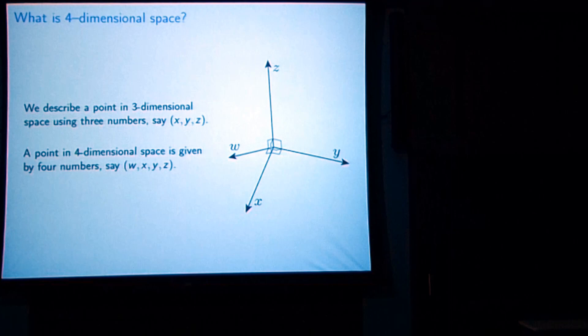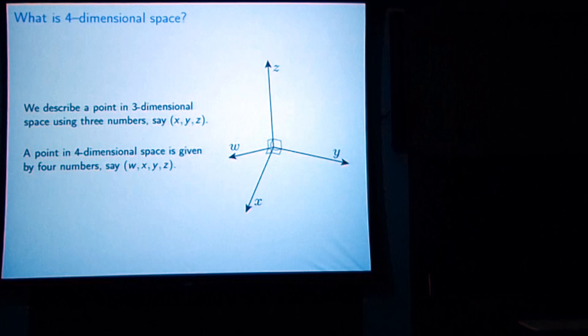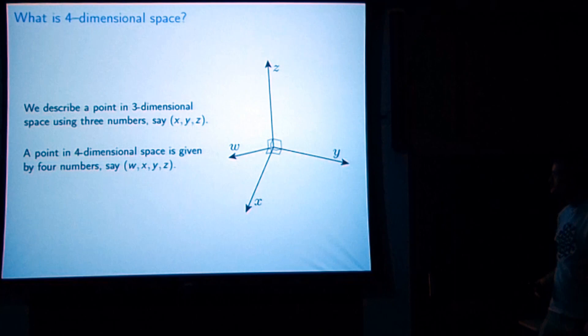A point in four-dimensional space is given by four numbers. And because we've run out of letters at the end of the alphabet, we add one up front, so we have w, x, y, z. You might say this is impossible — you can't fit a fourth perpendicular direction into what you already have. Well, this picture is a lie.